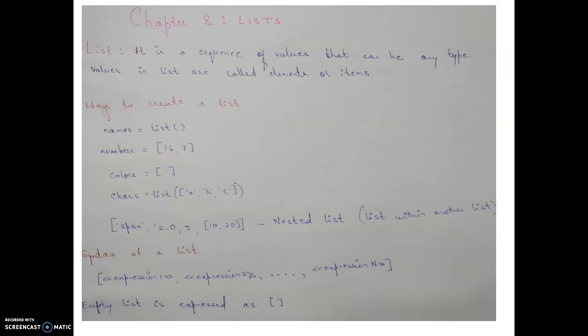Whatever values we have in the list are called elements or items. To create a list, you either give the name of the list equal to the list function with parentheses, or initialize it along with its values using square brackets. Empty square brackets represent an empty list. Strings are enclosed in single quotes. As an example of heterogeneous data type, a list can contain a string, a float, an integer, and even another list.